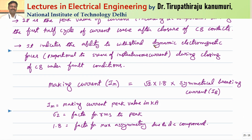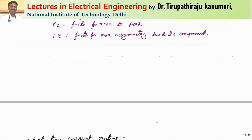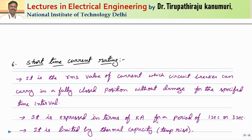The making current indicates the ability of the circuit breaker to withstand dynamic electromagnetic forces — proportional to the square of instantaneous current — during closing under fault conditions. The making current is given by: √2 × 1.8 × symmetrical breaking current. The factor 1.8 accounts for maximum asymmetry: 100% AC component plus 80% DC component gives a total factor of 1.8, meaning the peak value can reach up to 1.8 times the normal AC component peak.